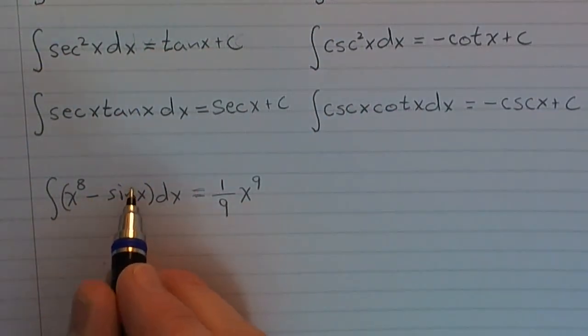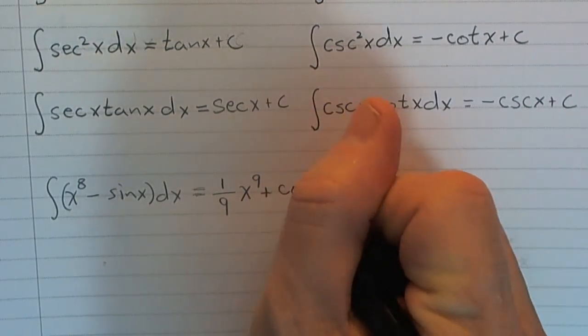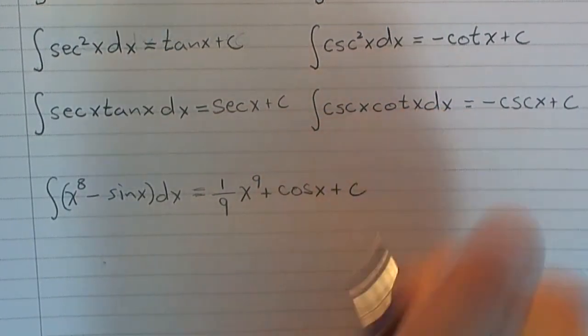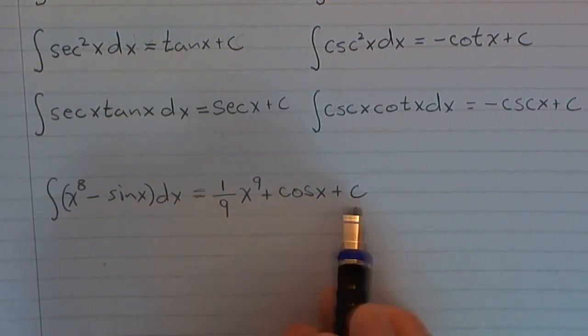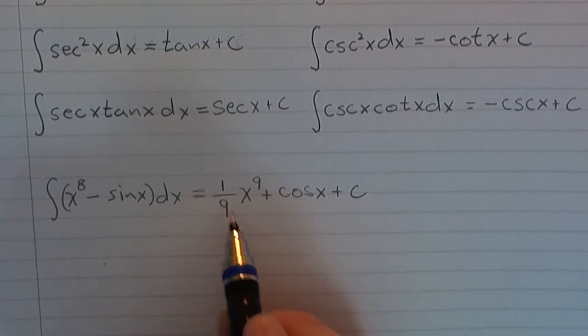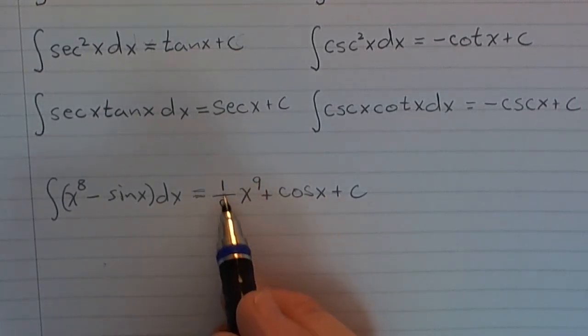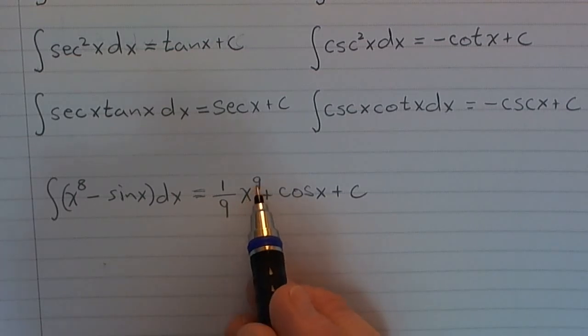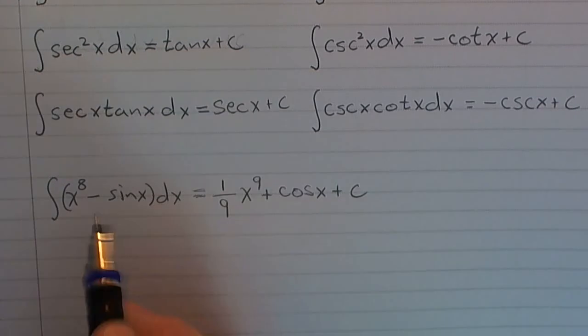Now, then we have a negative sign. Well, we could just write that as cosine, because it's already got the negative there. And notice if we differentiate through, we can check our work. The derivative of this is nine times this one ninth. That's just one, x to the eighth, power rule. The derivative of cosine is negative sine. So we get right back where we started.